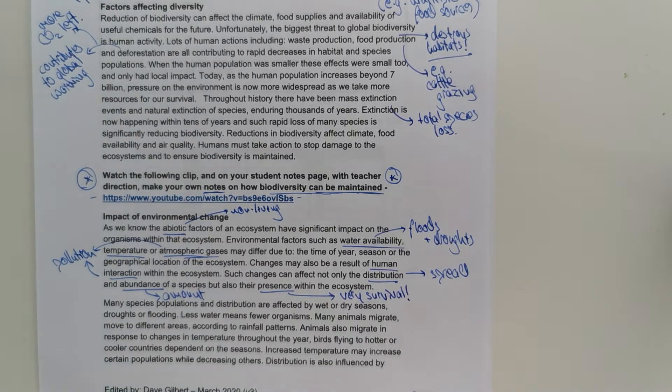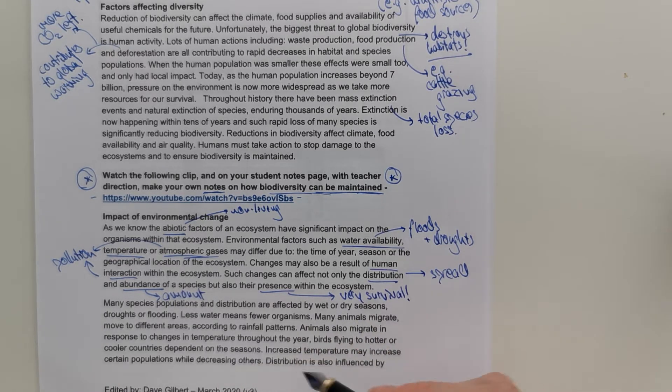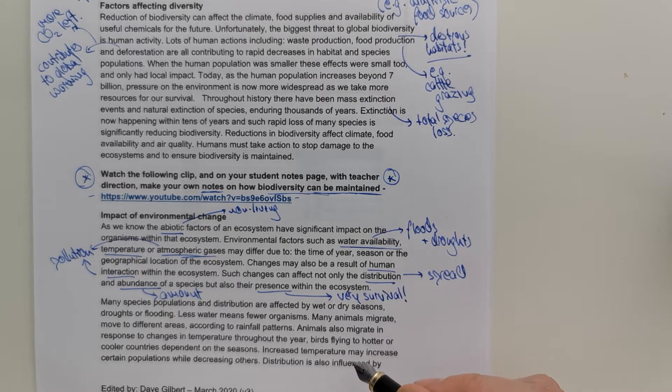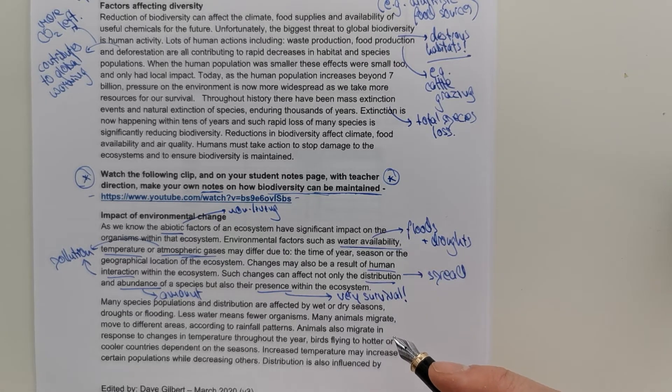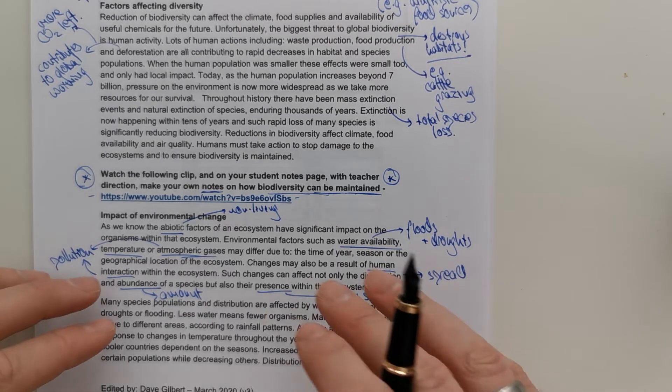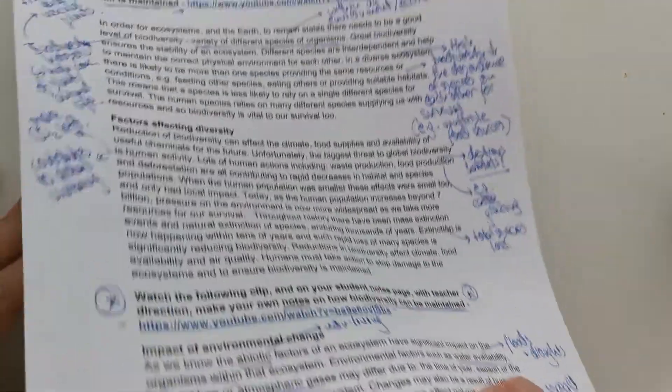So, many species populations are affected by wet and dry seasons, drought and flooding. Less water means fewer organisms. Many animals migrate and move to different areas according to rainfall patterns. Animals also migrate in response to changes in temperature throughout the year. Birds flying to hotter and cooler countries depending on the seasons. Increased temperatures may increase certain populations while decreasing others. Distribution changes in the air. For example, some species cannot grow in areas with high levels of pollution. So, we've gone through quite a bit of information there.